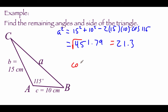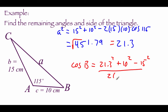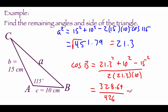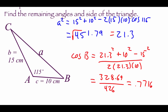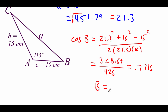Now finding angle B: cosine of B equals 21.3 squared plus 10 squared minus 15 squared all over 2 times 21.3 times 10. On top we end up with 328.69, and on the bottom we get 426. Dividing gives 0.7716, and the inverse cosine gives angle B as 39.5 degrees. We've got two angles inside our triangle, so the missing angle C must be 25.5 degrees.